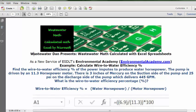What is the wire-to-water efficiency percentage? This solution uses the formula to calculate wire-to-water efficiency percentage, which equals the water horsepower divided by the motor horsepower. You can see we are given the motor horsepower, but we are not given the water horsepower.